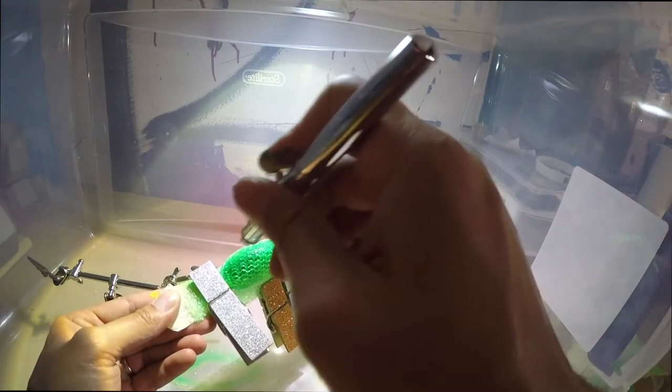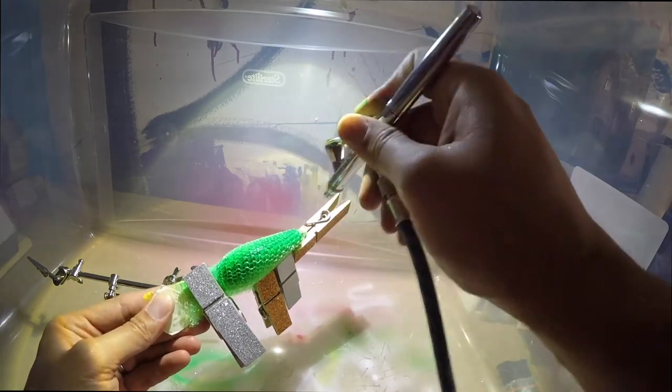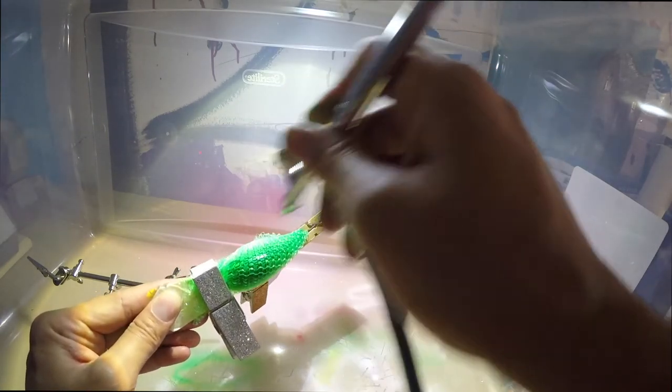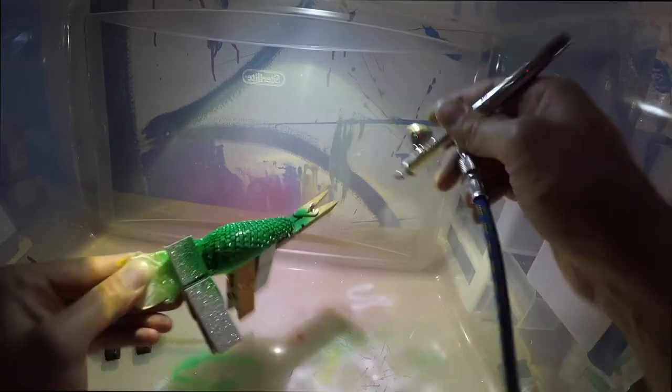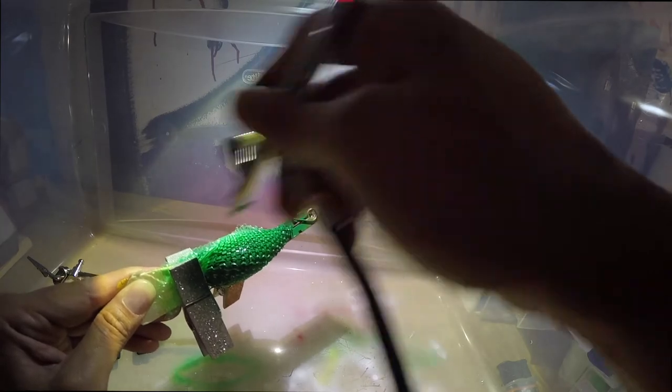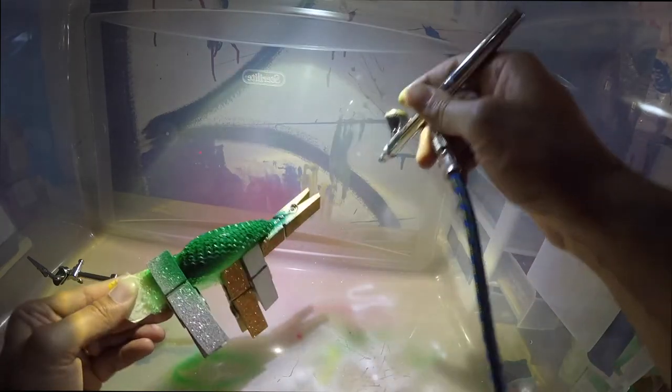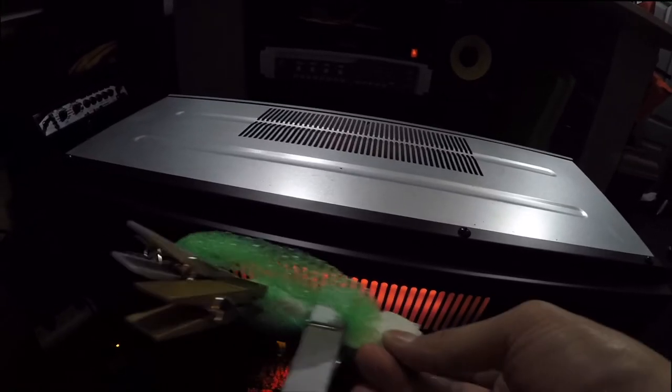This is going to give it the scale pattern on top. Now this one you don't want to go all the way down because remember you're blending your color. So this one you're going to do more of the top and a little bit of the sides so you can get that scale pattern that you want.